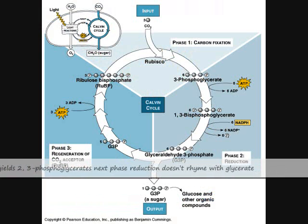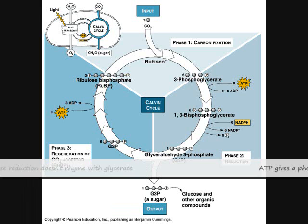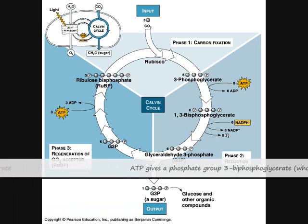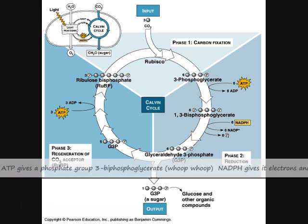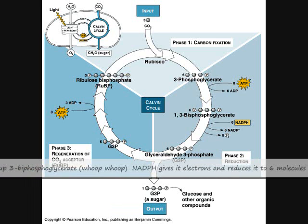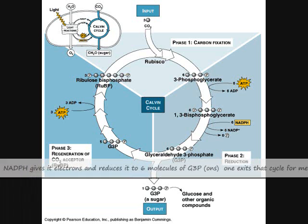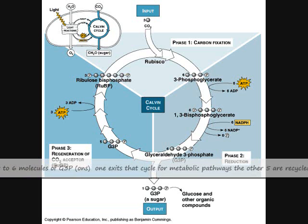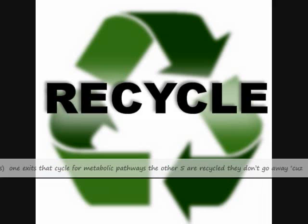The next phase is reduction. ATP gives a phosphate group to make 3-bisphosphoglycerate. NADPH gives it electrons and reduces it to six molecules of G3P. One exits the cycle into metabolic pathways, and the other five are recycled — they don't go away.